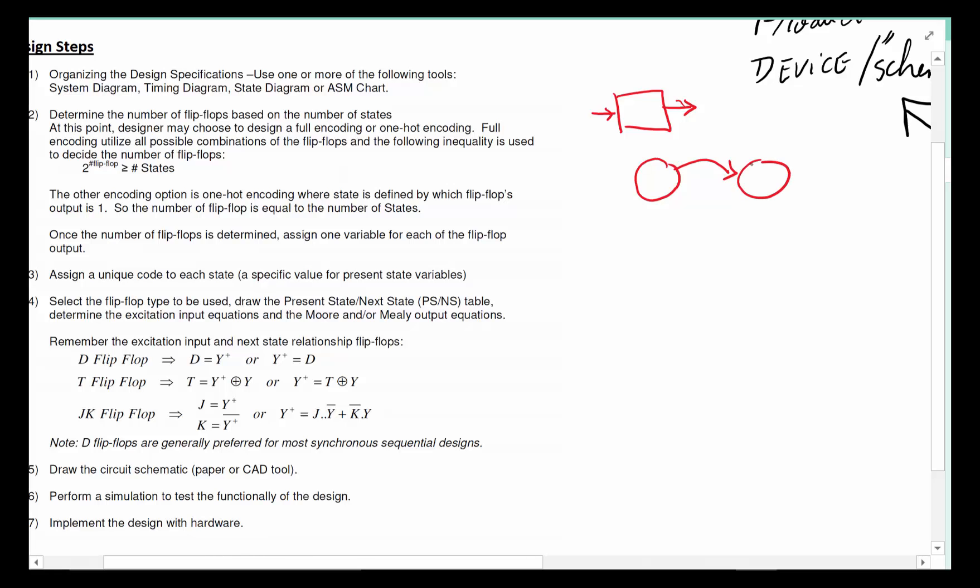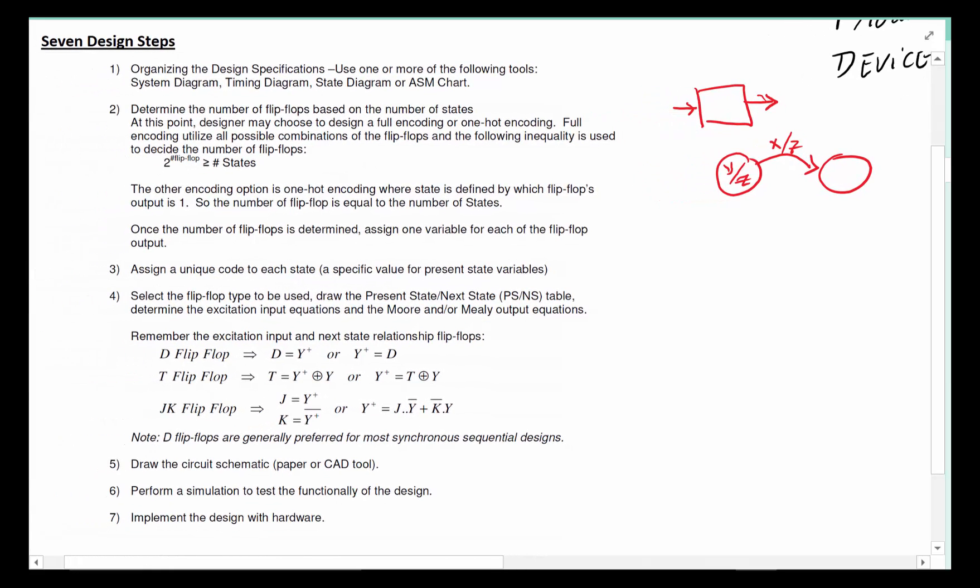The next step would be to define what the different states are, so doing a state diagram. Once you've defined what the states are, how many inputs and states we have, what kinds of outputs, once that whole state diagram is done, then we are done with step one.